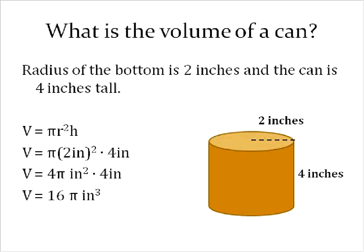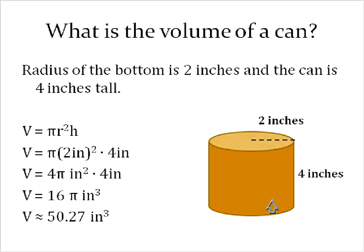I have the exact volume of 16 pi inches cubed. Because we don't usually talk in terms of pi like that, let's go ahead and convert that into a number. The approximate volume would be 50.27 inches cubed for this can, which has a radius of 2 inches and a height of 4 inches.